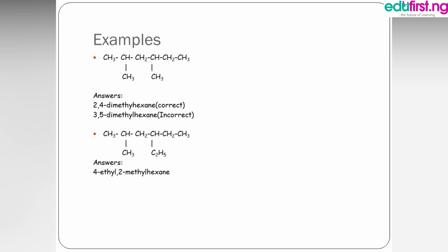In another example, the longest carbon chain is again six — hexane. Counting from the right gives substituent positions 2 and 4, while counting from behind gives 3 and 5, so we use 2 and 4. The substituent CH3 is called methyl and it appears twice, so you write the positions in which they occur: 2,4-dimethylhexane.